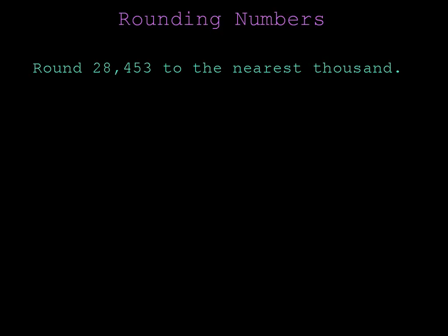The first thing that you should do is to underline the thousands place so you can focus on the digit that you're going to be rounding. The digit in the thousands place is the 8. Now, draw an arrow to your next number. The next number is a 4, and this is the number that tells me what to do with the 8. If this number is below 5, then I keep this number the same. If this number is 5 or above, then I would bump the 8 up to a 9.